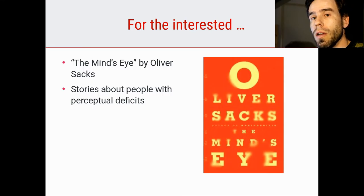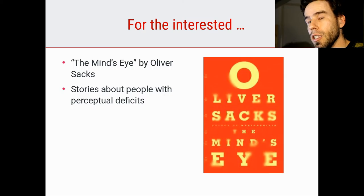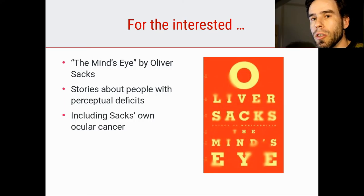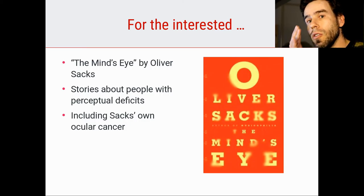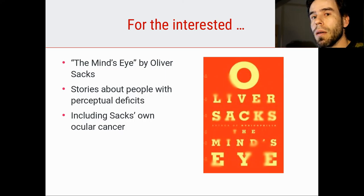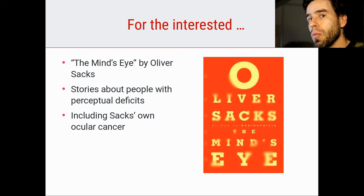For example, he talks about a woman who develops agnosia — she becomes progressively less able to recognize the objects that she sees. What makes this book somewhat grim but beautiful at the same time is that Oliver Sacks also talks about his own ocular cancer, which he developed at some point. So he had a tumor in his eye. At the end of this book he was treated for this and mostly cured.